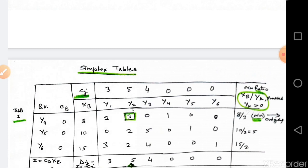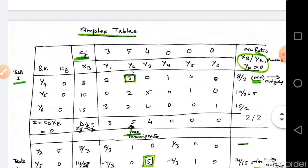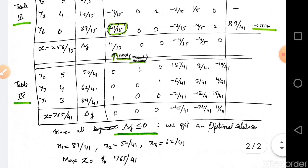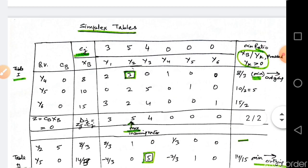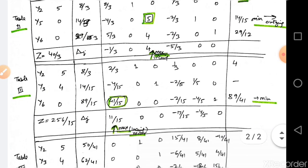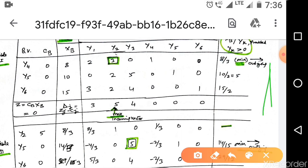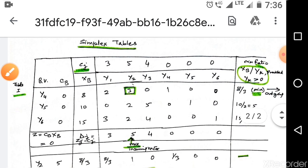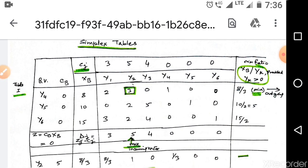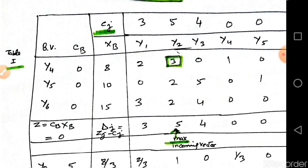Step 5: construct the starting simplex table. We make a combined simplex table, indicating Table 1, Table 2, Table 3, Table 4, and so on, with calculations on the right-hand side for easy rechecking. In Table 1, we write the basic variables y4, y5, y6 with basic variable cost 0, and the cost coefficients c4, c5, c6.